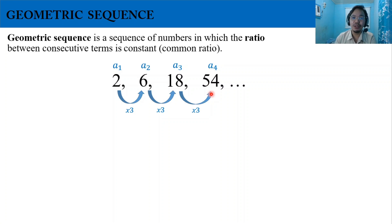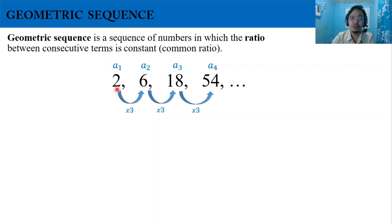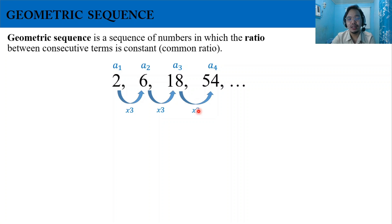On the other side, if we divide a term by the previous term, we get the same number — the common ratio. For example, 6 divided by 2 is 3; 18 divided by 6 is also 3; and 54 divided by 18 is also 3. So in this sequence, the common ratio is 3.